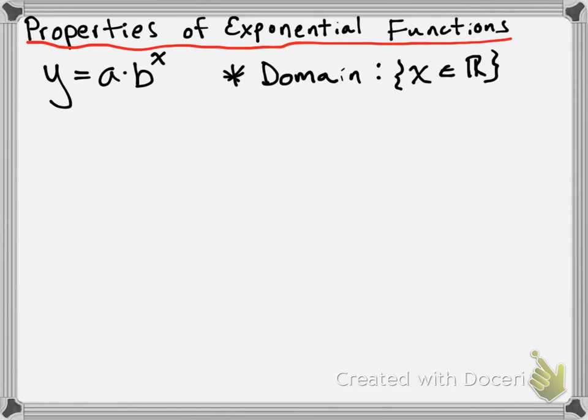That makes sense given that you could have positive whole numbers as exponents, but we've also talked about what happens when you have negative exponents — we know we can evaluate those. And we've also just recently talked about what happens when you have rational exponents. So pretty much any kind of x value you can substitute in and you'll be able to get some kind of y value associated with it.